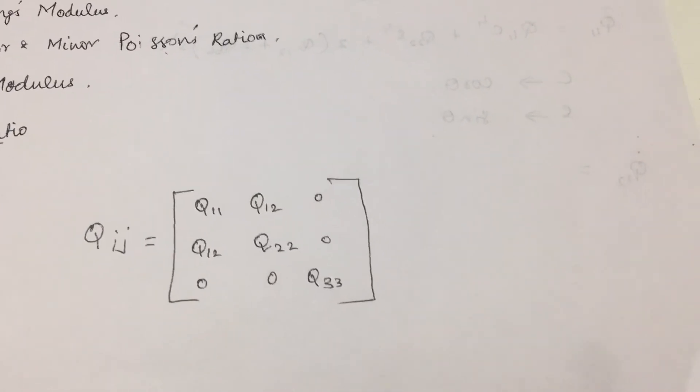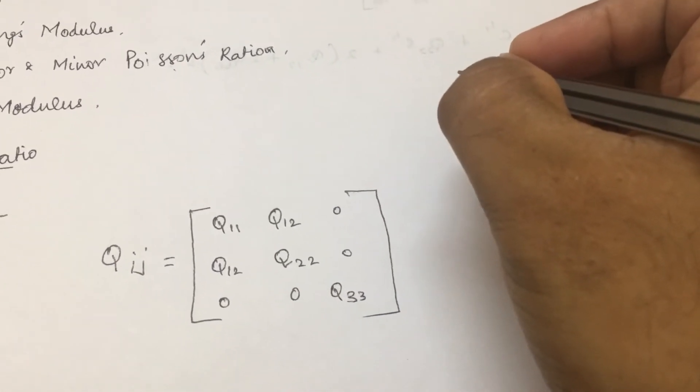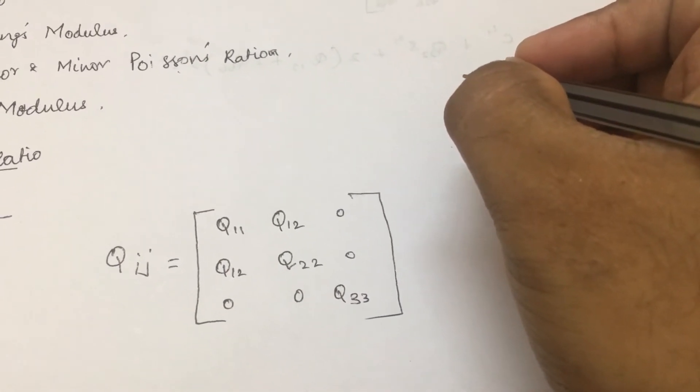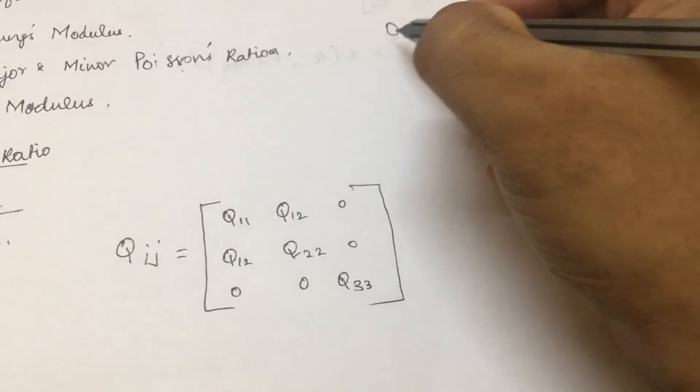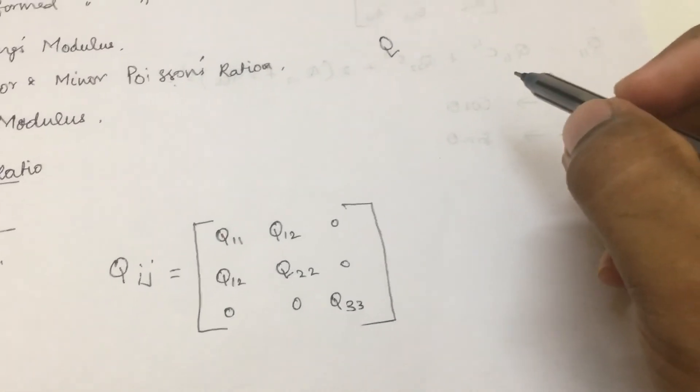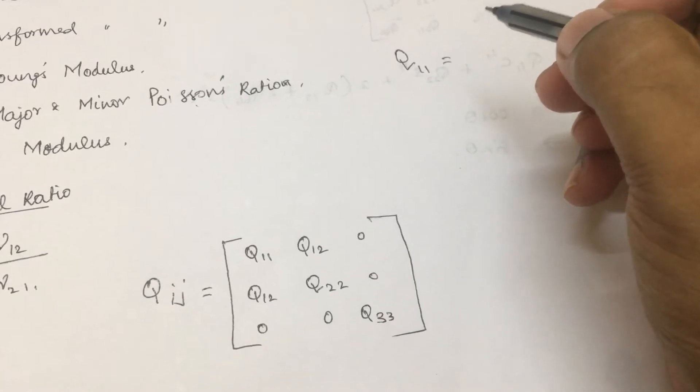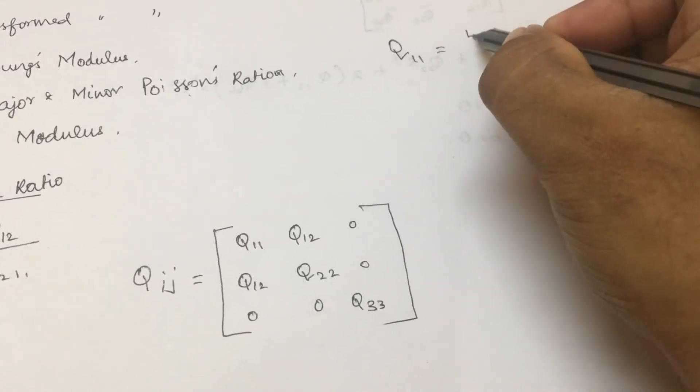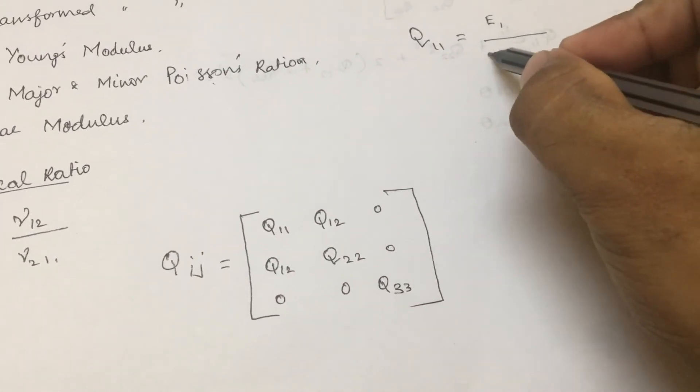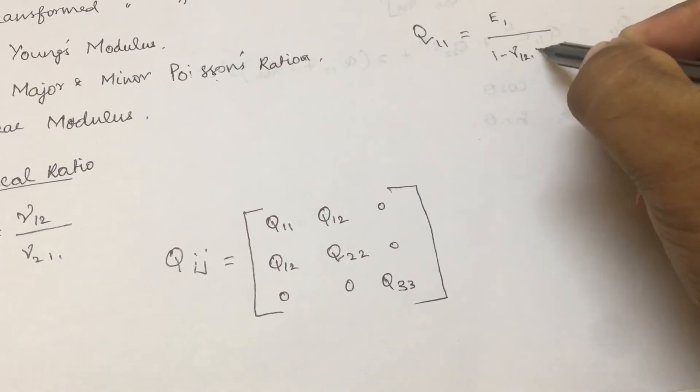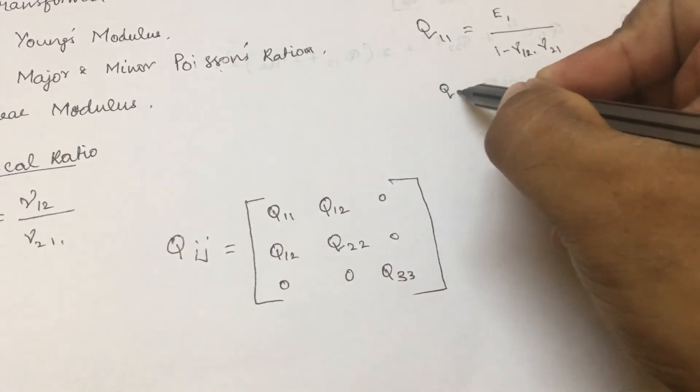Let us now see how to find Q11, Q22, Q12, and Q33. First is Q11. The equation for finding Q11 is E1 divided by 1 minus mu12 times mu21. Next is Q12.